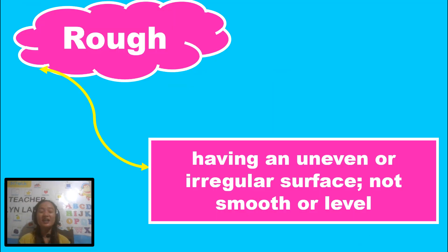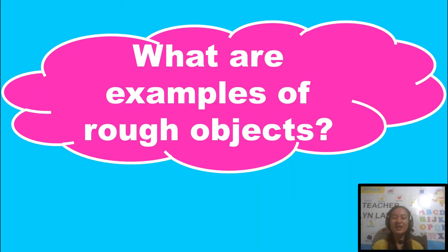Now, what do we mean by rough? Rough means having an uneven or irregular surface, not smooth or level. So, we have this question: what are examples of rough objects?